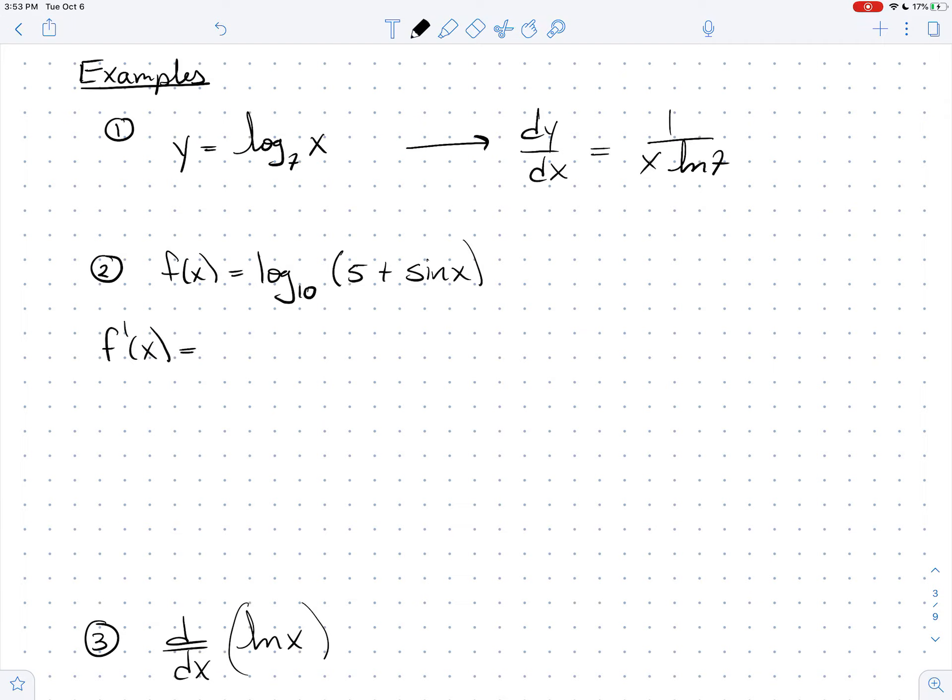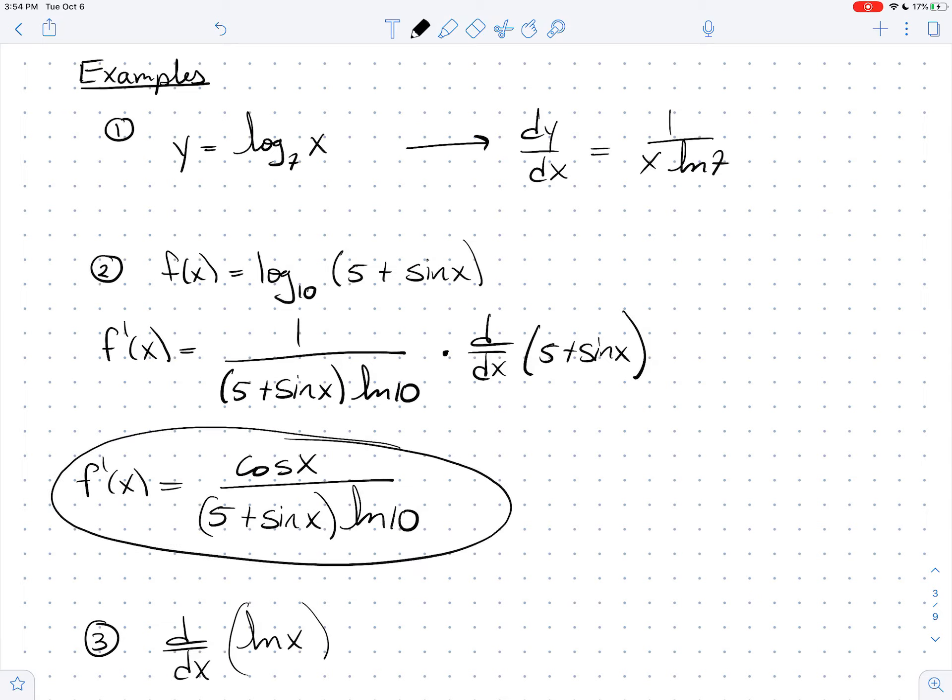So I want to compute f prime of x and I take the derivative of the outside, the derivative of the logarithm, we know is going to be 1 over x, plug in the inside, so 1 over 5 plus sine of x times natural log of 10 times the derivative of the inside. And so of course the derivative of 5 plus sine is just cosine. And so this derivative is just cosine of x over 5 plus the sine of x all times the natural log of 10. And I'm going to circle that because I'm getting kind of close to my next example.